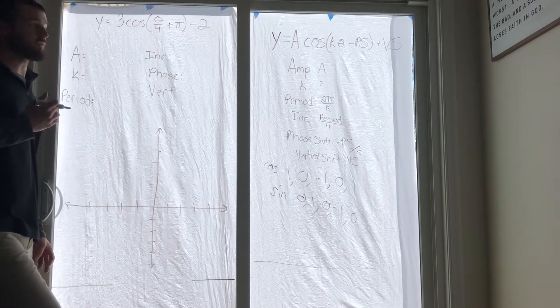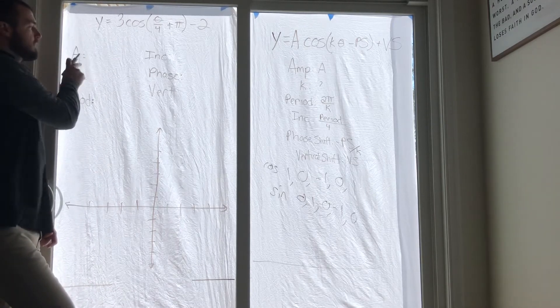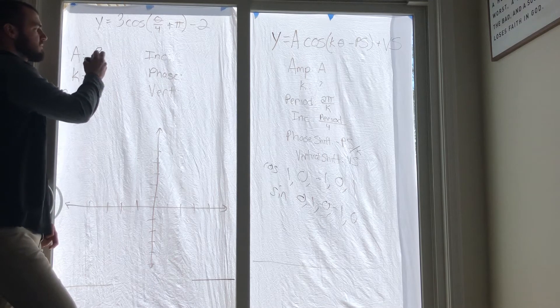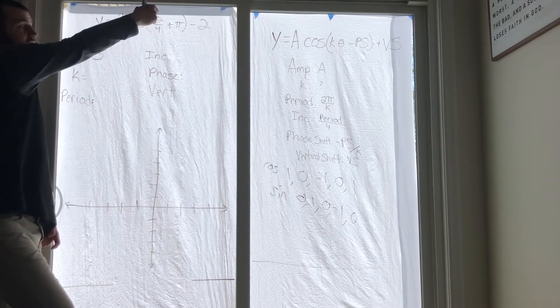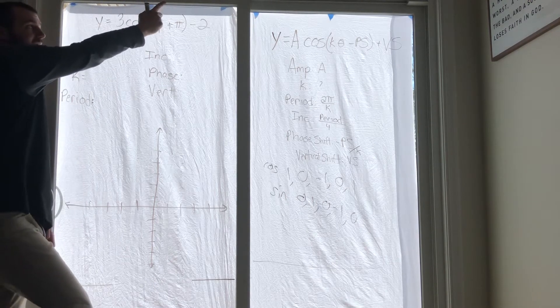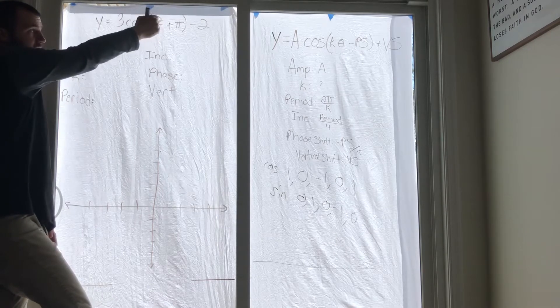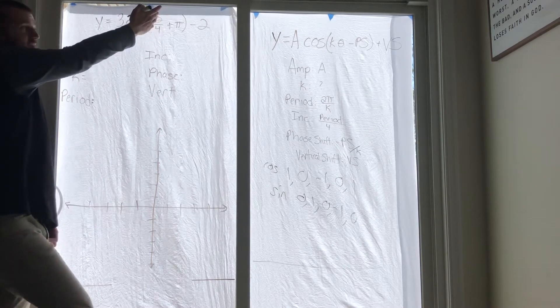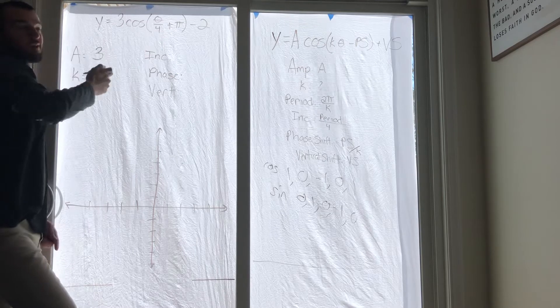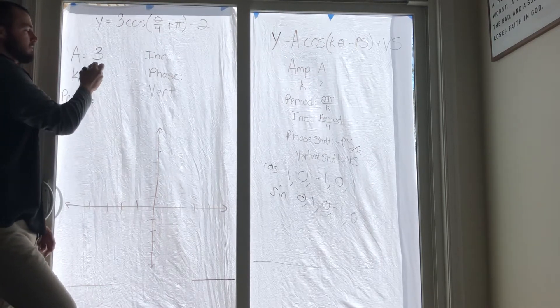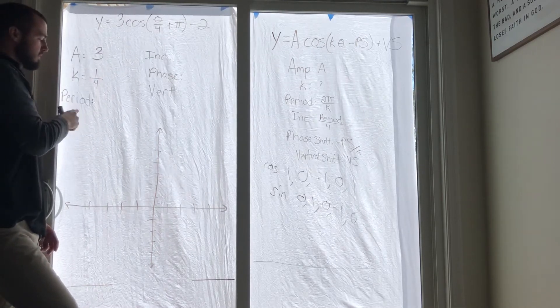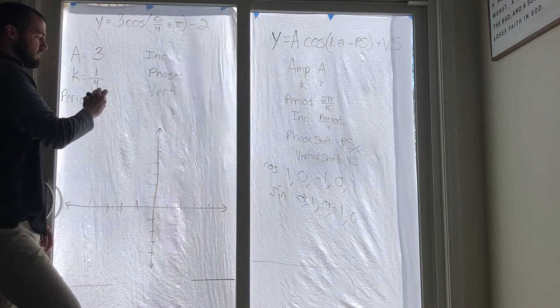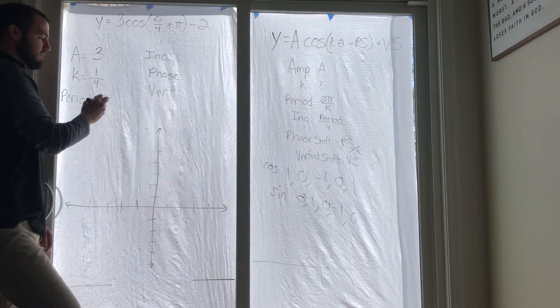So the a value is 3. Our k value is the number that's being multiplied by theta. You can look at it and you're probably going to say 'oh, it's divided by 4'. It is divided by 4, but it's being multiplied by 1/4.